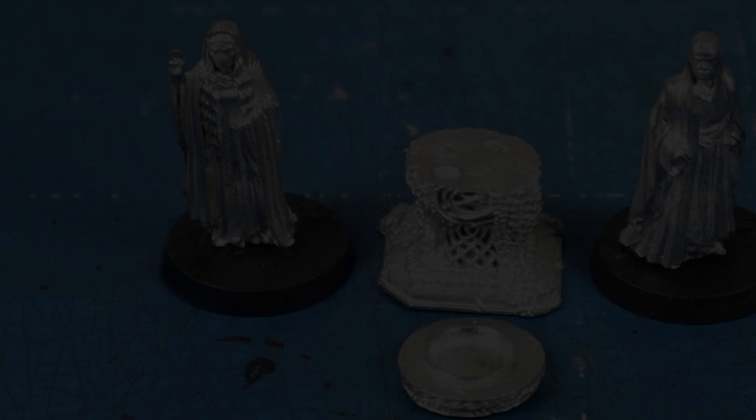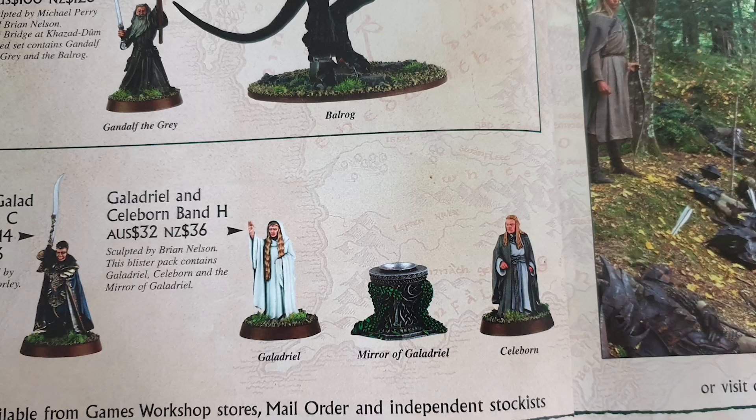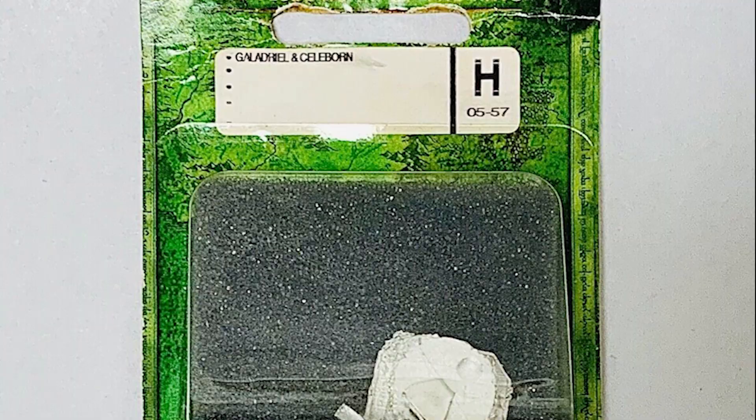Hi, welcome back to Mini-Earth and today I'll be painting out my Galadriel and Celeborn miniatures. These are some more classics, released early on in the days of the Fellowship of the Ring's strategy battle game days. Coming out in February 2002, these fantastic sculpts were done by Brian Nelson and cast in white metal, packed together in a blister pack along with the mirror of Galadriel.